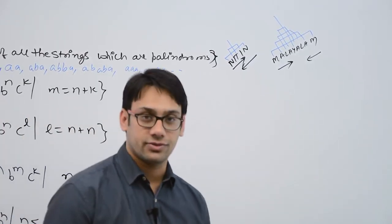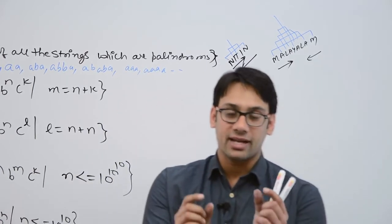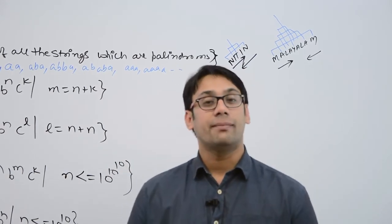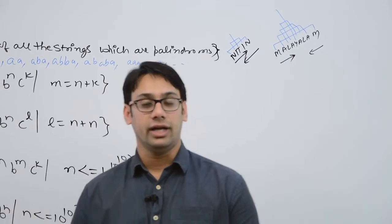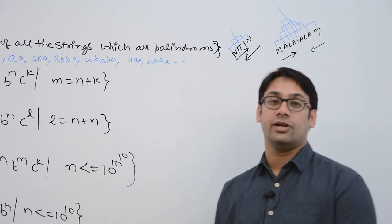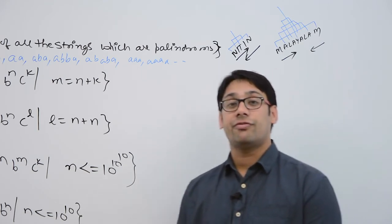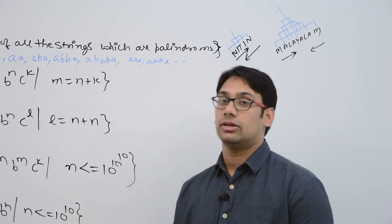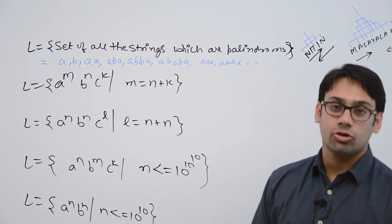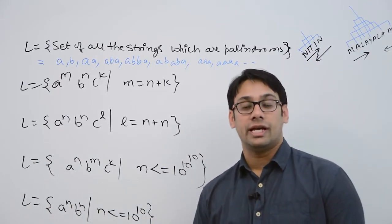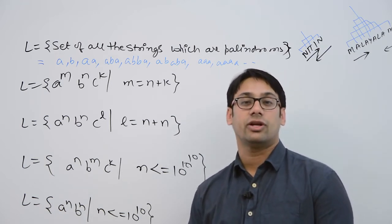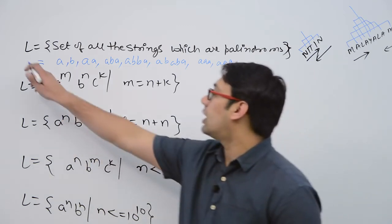So it says that for strings which are palindromes, there should be a comparison between the first symbol and the last symbol, between the second symbol and the second-last symbol, and so on. That comparison is not at all possible with finite automatas. Therefore, you cannot draw a finite automata for such palindrome strings. If the length of the string can be infinite, finite automata is not possible, the language is not regular, and therefore regular expression and regular grammar are also not possible.